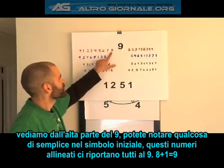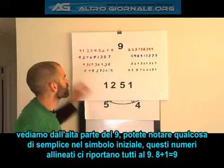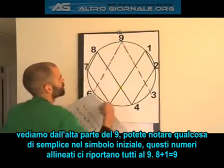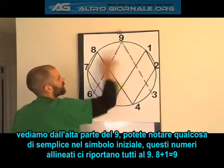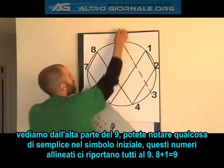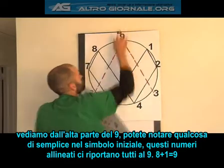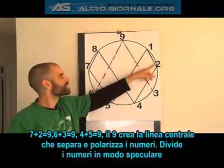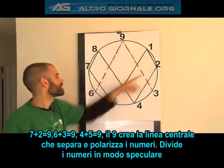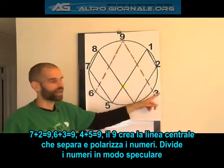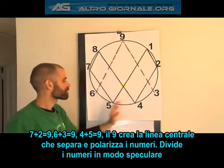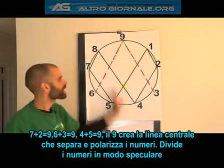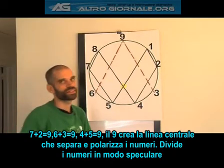If I come over here on the other side of my 9, you can notice something pretty simple right away with my initial symbol. These numbers that are all lined up straight across, we can notice they all equal back to 9. So 8 plus 1 is 9, 7 and 2 is 9, 6 and 3 is 9, 5 and 4 is 9. So 9 is always forming the center line that separates and polarizes the numbers.